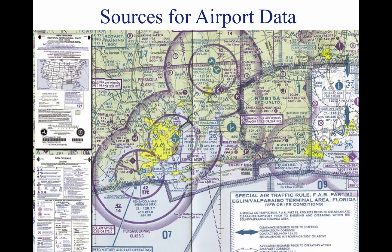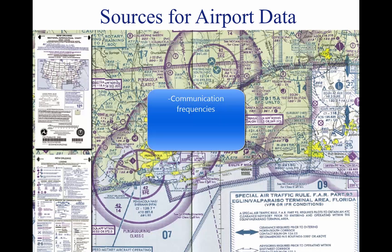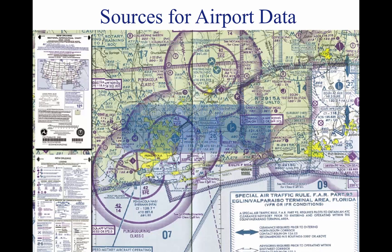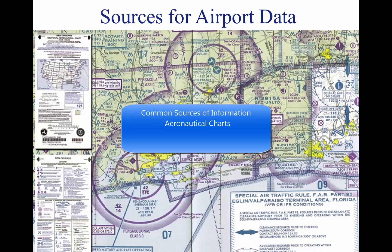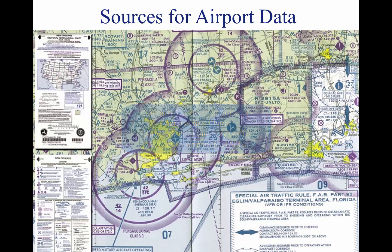Sources for airport data. When a pilot flies into a different airport, it is important to review the current data for that airport. This data provides the pilot with information such as communication frequencies, services available, closed runways, or airport construction. Three common sources of information are aeronautical charts, airport facility directory (AFD), and notices to airmen (NOTAMs).